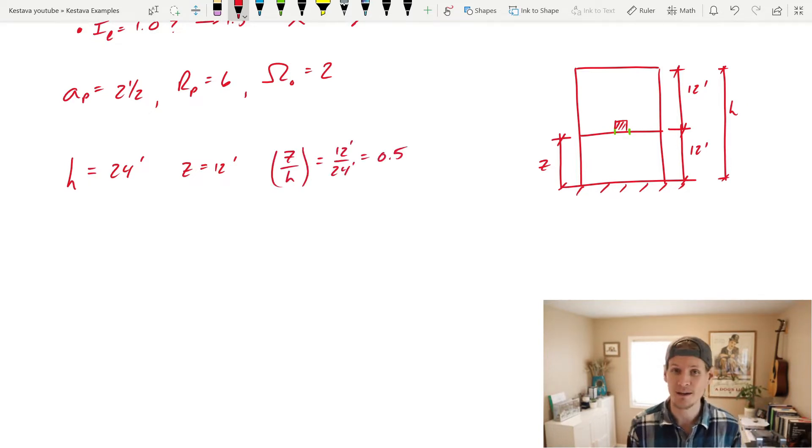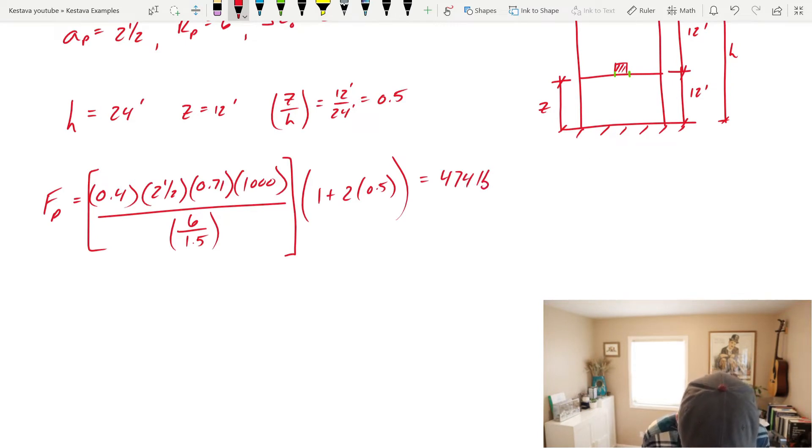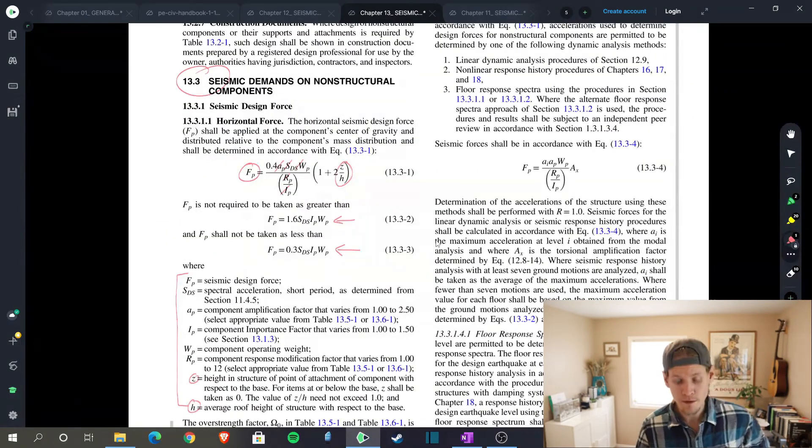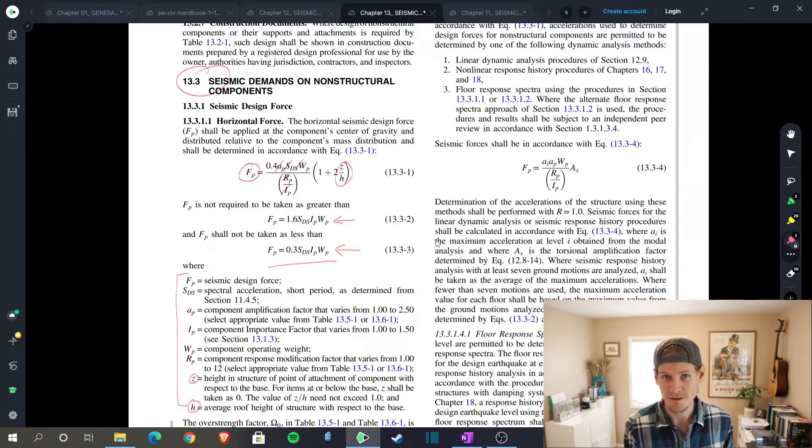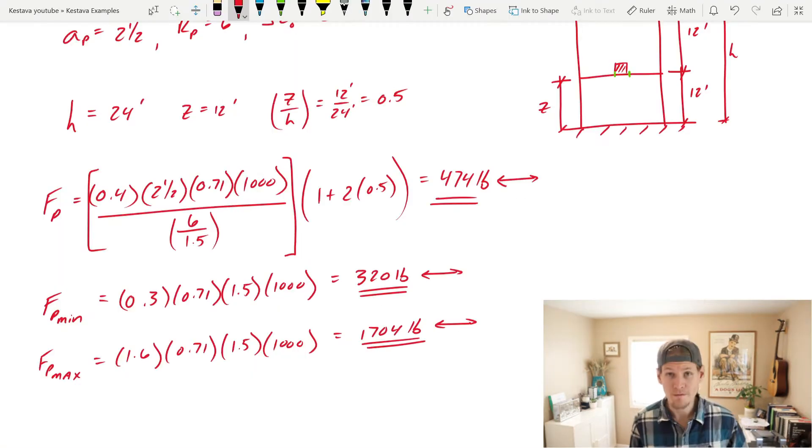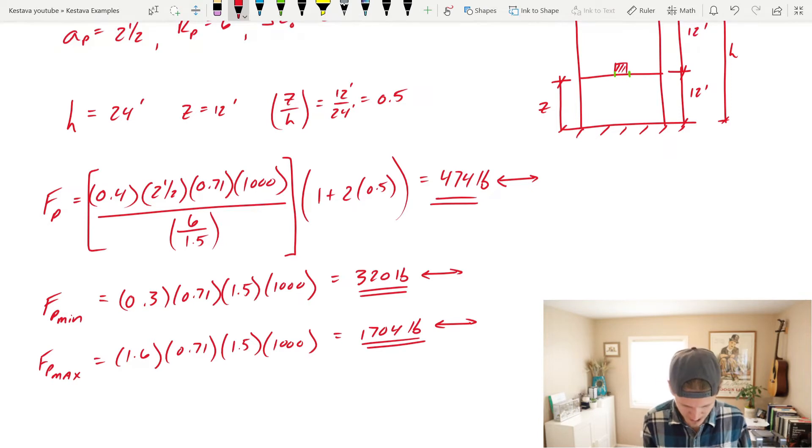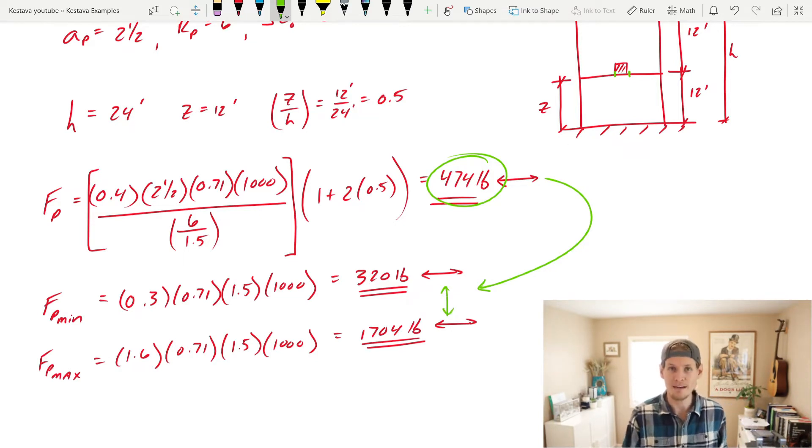Now we have all of our components. Plug everything in. All that gets is 474 pounds of lateral force in each direction. Fp min is 0.3 SDS importance times weight. And Fp max is 1.6 SDS times importance times the weight of your unit. Let's plug all that stuff in because we have everything. We have a minimum of 320 pounds and a maximum of 1,704 pounds. And what you do is you just need to make sure that your Fp value that I circled in green falls between these two values.